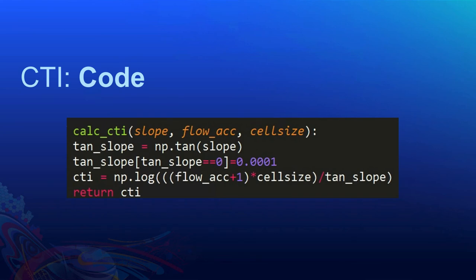The core part of the CTI computation takes the slope value, flow accumulation value, and cell size of the raster. It computes the tangent value of the slope. Since tangent values can be zero in some cases, zero values are replaced with a very small number to avoid division errors. Then it uses NumPy's built-in logarithm method to implement the formula and compute the CTI output pixel values.